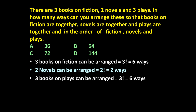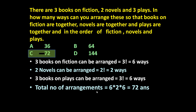Now the problem states fiction are together, novels are together, and plays are together — and in the order of fiction, novels, and plays. This means their order cannot be changed. First fiction, then novels, then plays. Since the order cannot be changed, the total number of arrangements will be six into two into six, which is equal to 72.